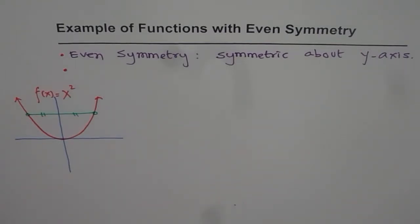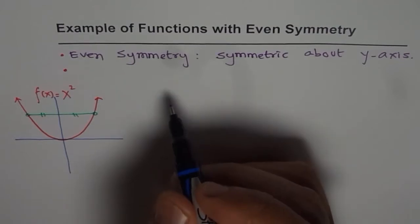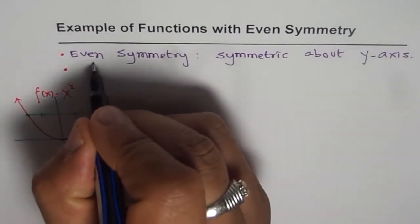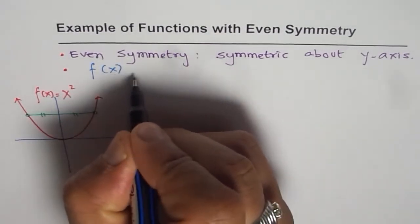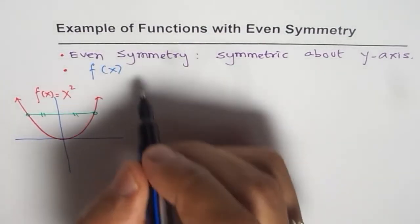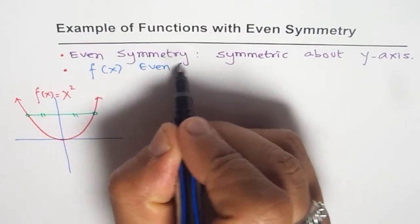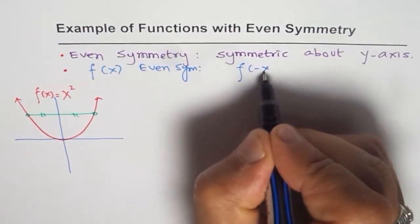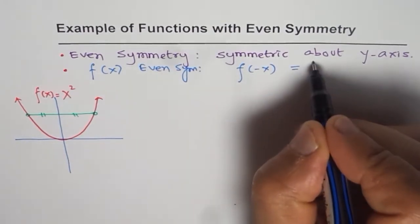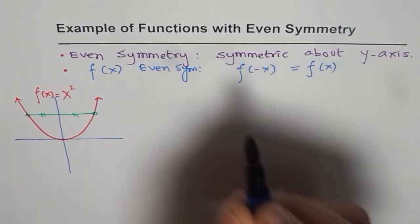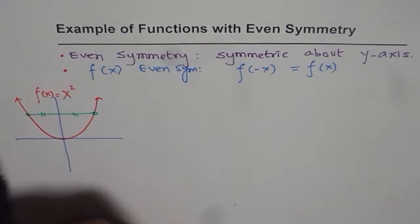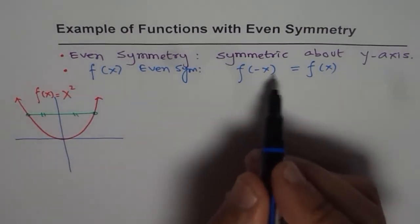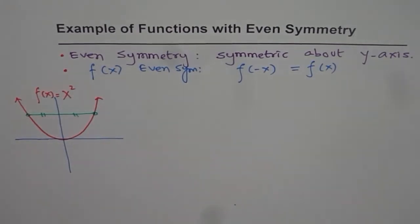Algebraically, we can prove it. And algebraically, how can we prove it? So that is a graphical proof. Algebraically, we say if the function f(x) has even symmetry, if f(-x) equals f(x). That means the values on the left side are having a mirror image on the other side. That is what is the algebraic proof.